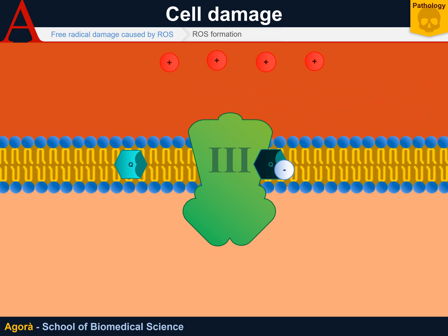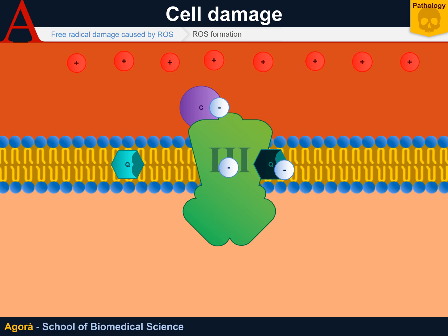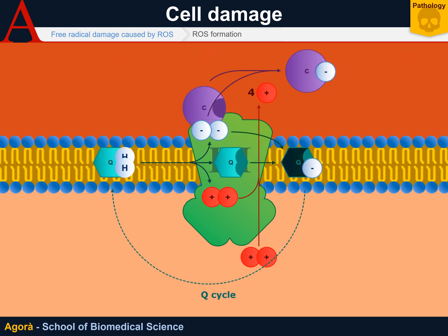However, Complex 3 is normally rapidly joined by another load of ubiquinone, which begins a new cycle that pumps out four protons. One electron is then passed to cytochrome C and another to Complex 3. The electron in Complex 3 immediately binds the semi-ubiquinone radical, converting it into a ubiquinone capable of carrying two loaded hydrogen atoms. This is Complex 3's reaction in brief.